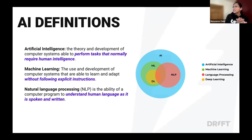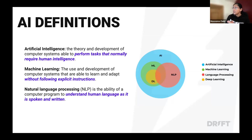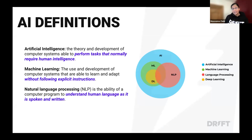Starting with some AI definitions, we wanted to level set on the top three key acronyms for this conversation. Artificial intelligence is the ability for computer systems to perform tasks that normally require human intelligence. AI is a broad category ranging from human-like robots, self-driving cars, and chatbots for marketers. Machine learning is a subset of AI that uses computer systems and algorithms to learn and adapt from data without explicit instructions.